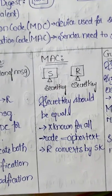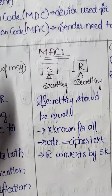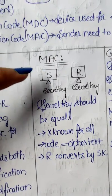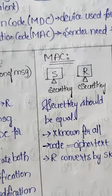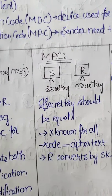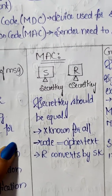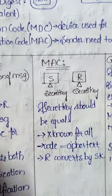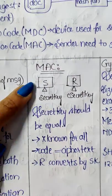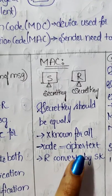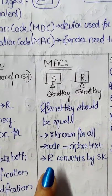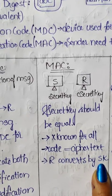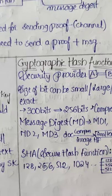Coming to Message Authentication Code. The sender and receiver will have security keys. Security keys should be equal and shouldn't be shared. They are kept as secret. By sharing the data from sender to receiver, the complete data should be in cipher text - it should be encrypted. Receiver converts this cipher text by using the security key.